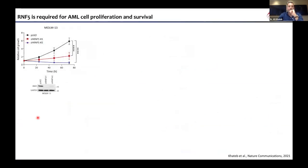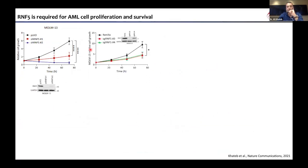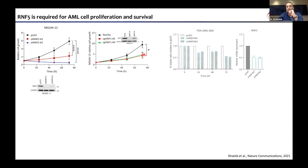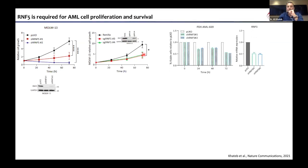We next asked whether RNF5 has any function in AML. We performed a simple experiment by knocking down RNF5 using different shRNAs and found that leukemia cells subjected to RNF5 knockdown have reduced proliferation. We confirmed this across different cell lines and shRNAs, and also by CRISPR analysis using two different guide RNAs targeting RNF5 versus a control guide RNA, showing reduced proliferation. We also tested this in PDXs — patient-derived xenografts — and showed that cells subjected to RNF5 knockdown have reduced viability compared with control cells.